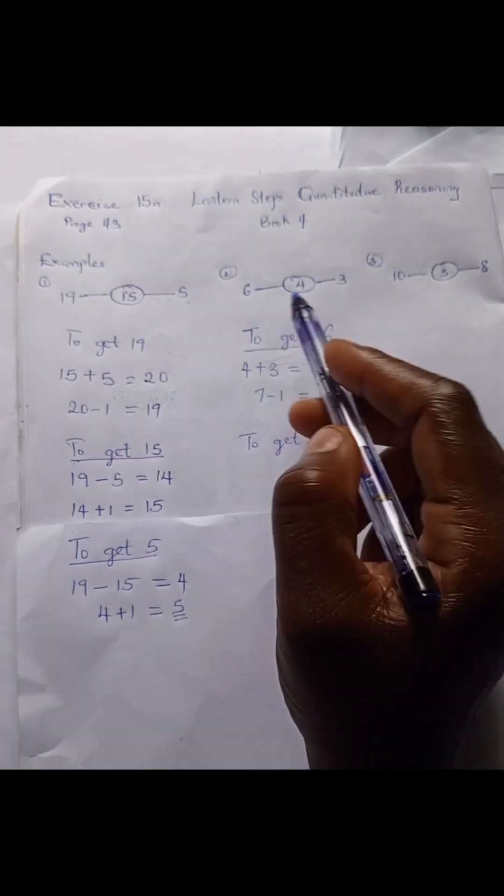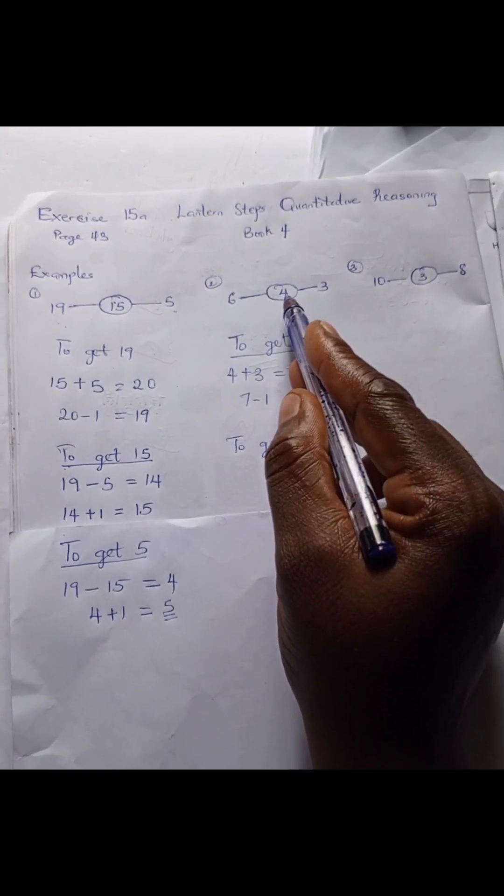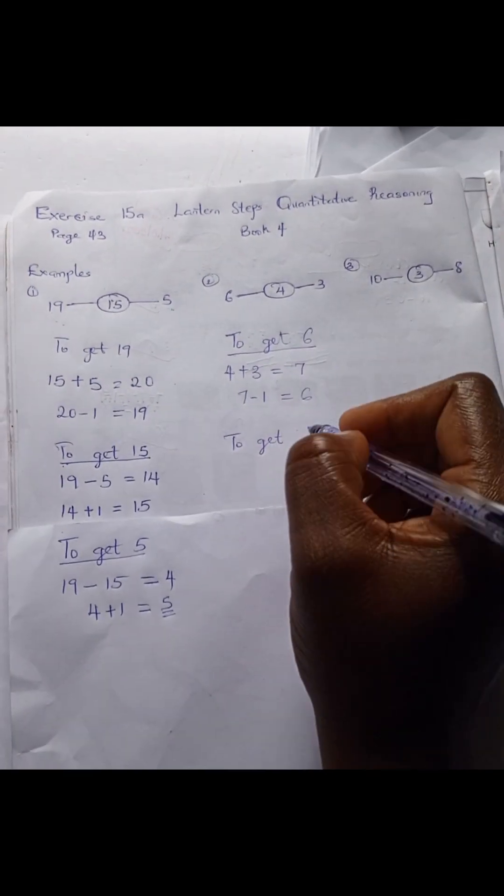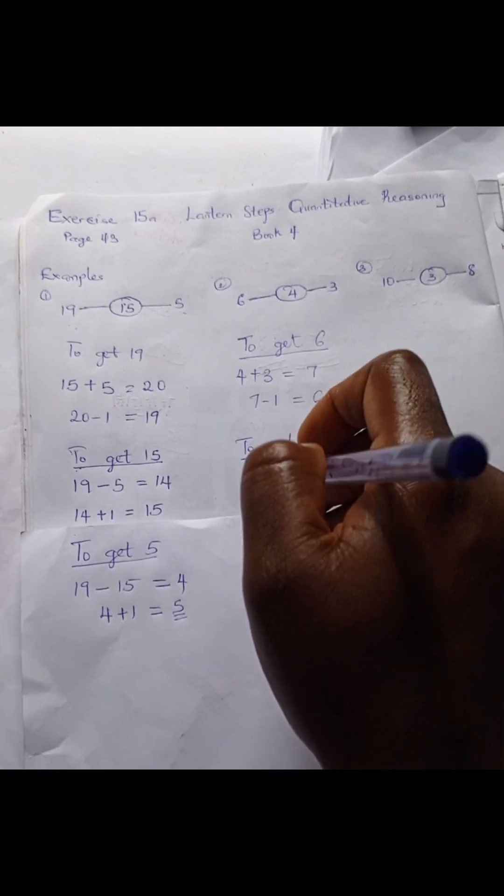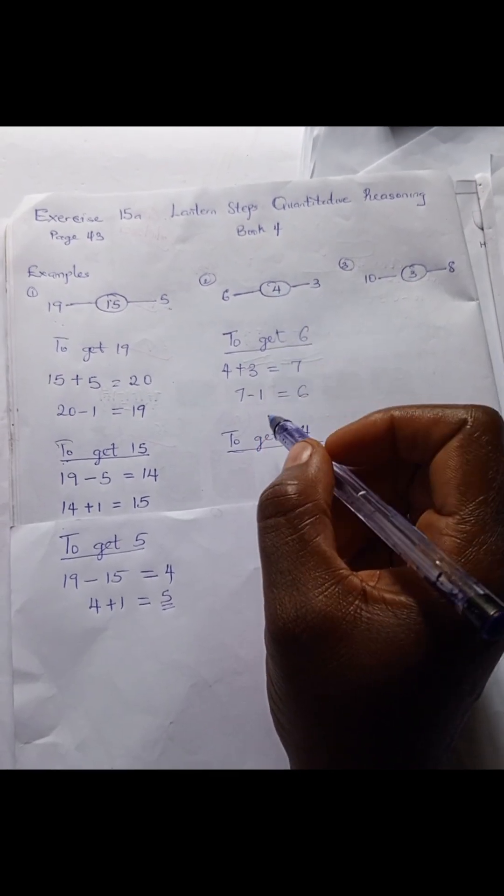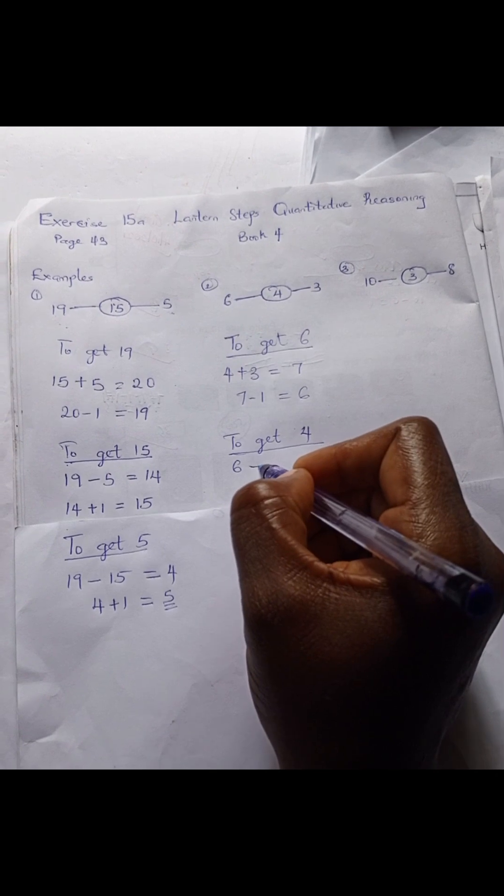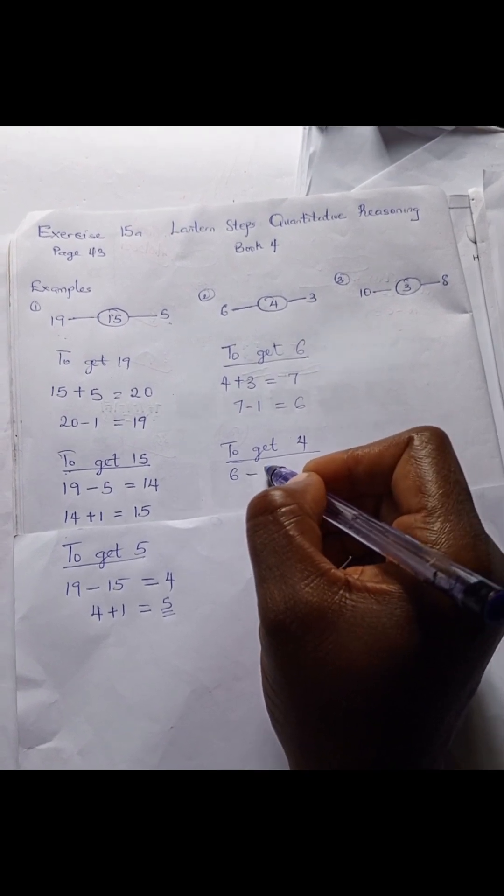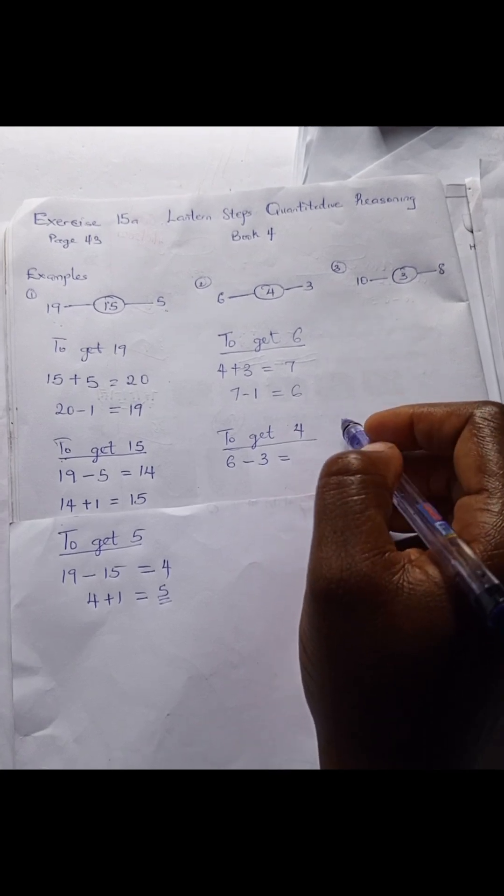To get the next number, which is 4, as against 15 in the previous example, we have 6 minus 3. 6 minus 3 is 3. Remember we have 1 somewhere, so 3 plus 1 is 4.